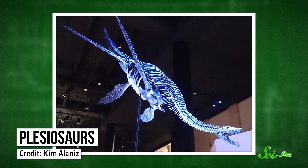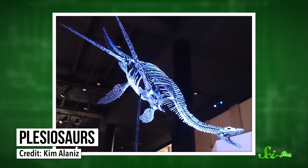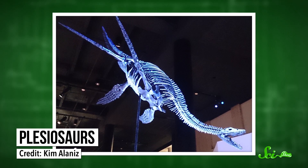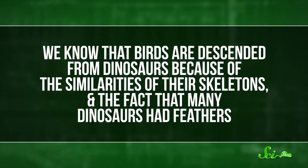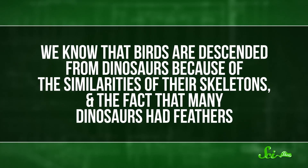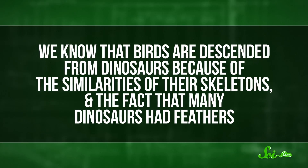Meanwhile, the plesiosaurs — a group of reptiles not closely related to dinosaurs — joined the ichthyosaurs in the ocean. There was one other major group of dinosaurs that appeared during the Jurassic: birds. We know that birds are descended from dinosaurs because of the similarities in their skeletons and the fact that many dinosaurs had feathers. And because people who study evolution like to include all of a group's descendants in that group, birds technically are dinosaurs. So if you've ever fed a chicken nugget that's shaped like a dinosaur to a child, that's a weird experience.